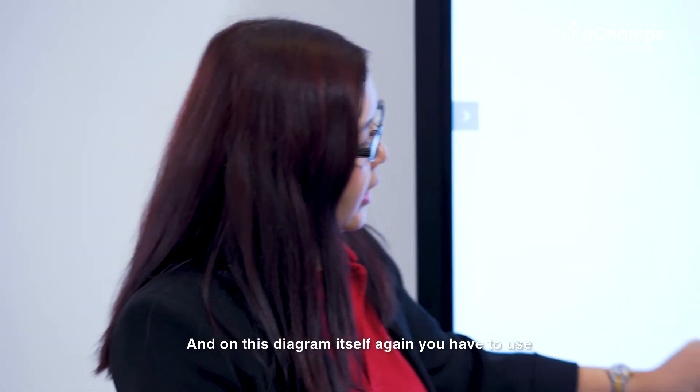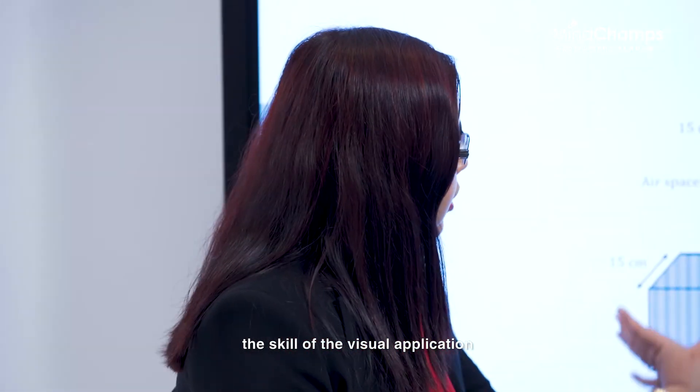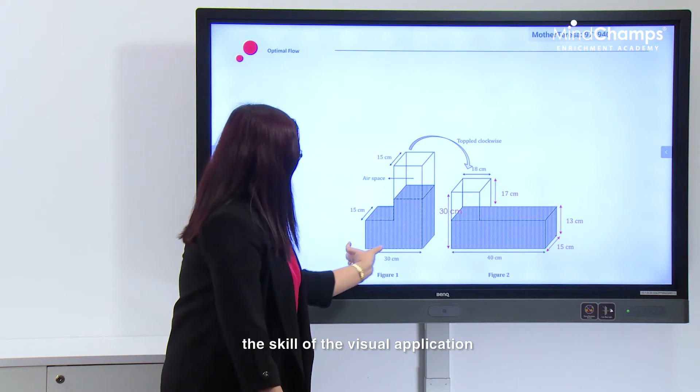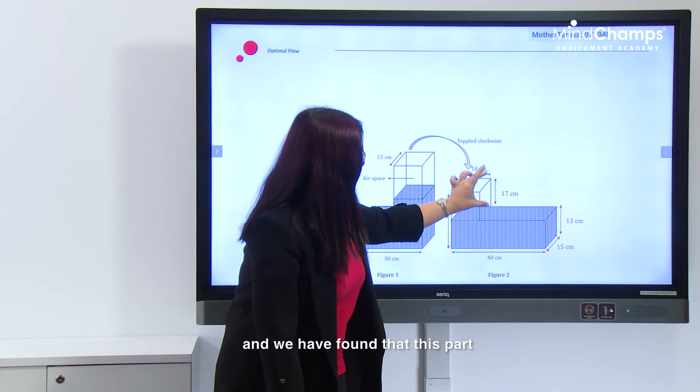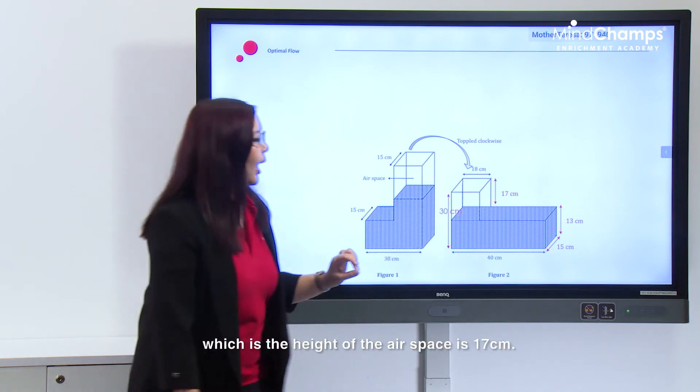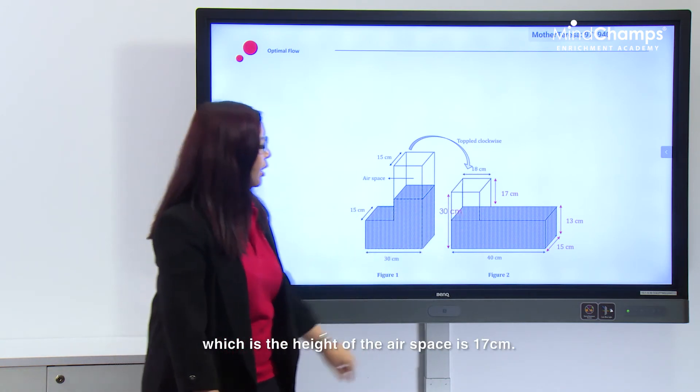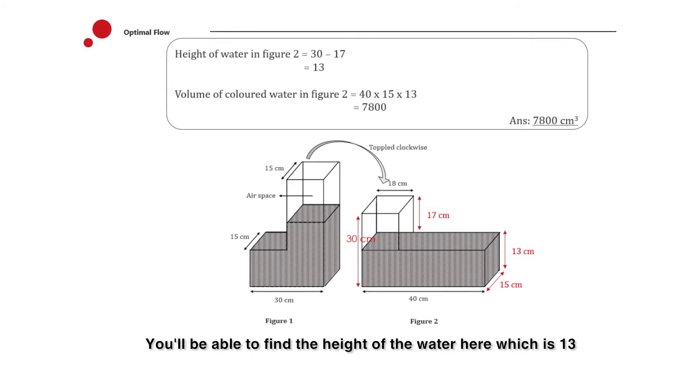On this diagram, you have to use the scale. This 30 centimeters is also 30 centimeters here, and we have found that this part, which is the height of the airspace, is 17 centimeters. You will be able to find the height of the water here, which is 13 centimeters.